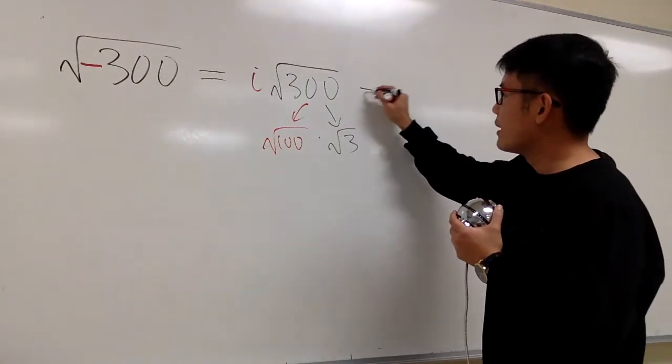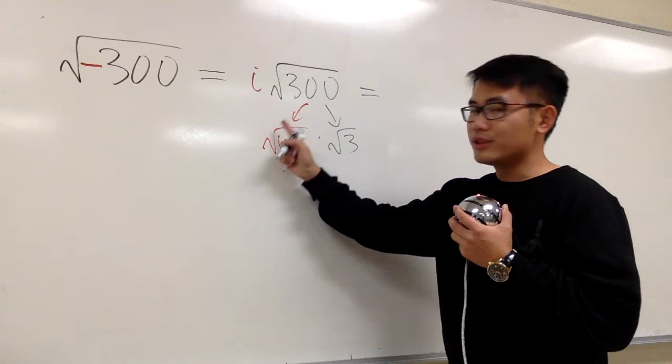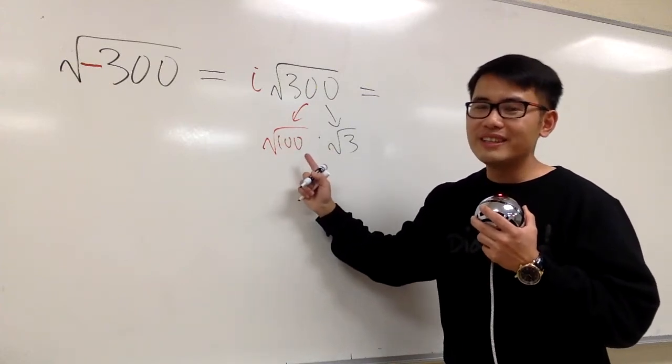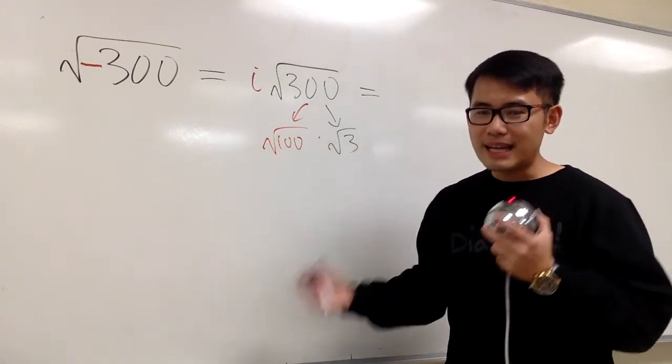So at the end, this is what we're going to get. We know this is just what? Square root of 100 is just 10. It's just a nice number.